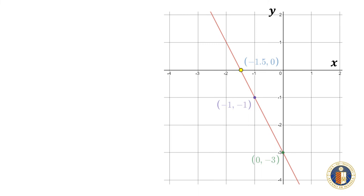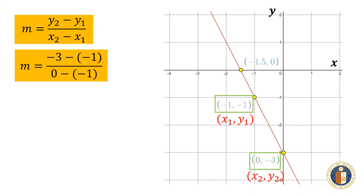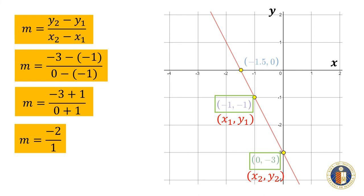Let us verify this graphically. If we take the point (-1, -1) to be our (x1, y1) and the point (0, -3) to be our (x2, y2), the slope would be equal to negative 3 minus negative 1 all over 0 minus negative 1. This can be written as m equals negative 3 plus 1 all over 0 plus 1. Simplifying, we get m equals negative 2 over 1, or simply m equals negative 2.